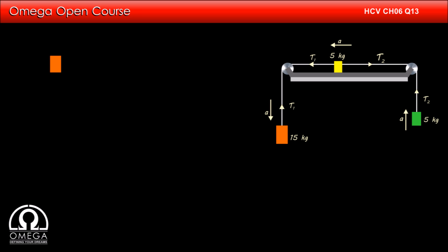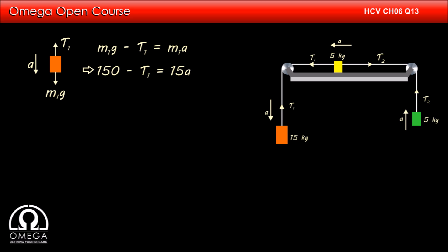Let us draw the free body diagram of the 15 kg block. If we denote its mass with m1, then the gravitational force m1g is pulling it in the downward direction. T1 in the string is pulling it in the upward direction and the block is moving downward with acceleration a. Writing the equation of motion in the vertical direction, we get m1g minus T1 equals m1a. Putting the values, we get 150 minus T1 equals 15a.